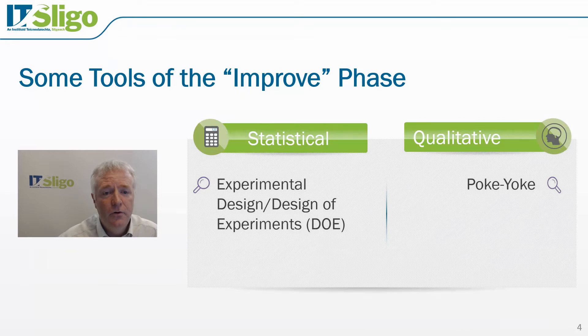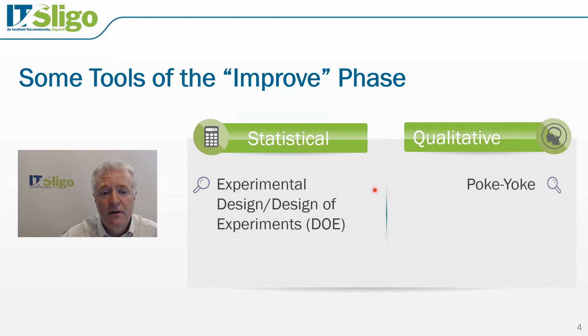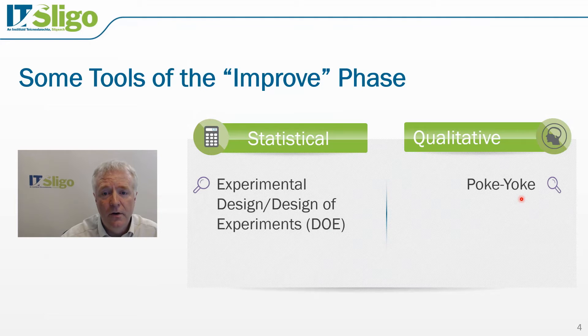There are a number of tools in the improve phase of the DMAIC process. There are statistical tools such as experimental design, and there are also qualitative tools such as poka-yoke or error-proofing.